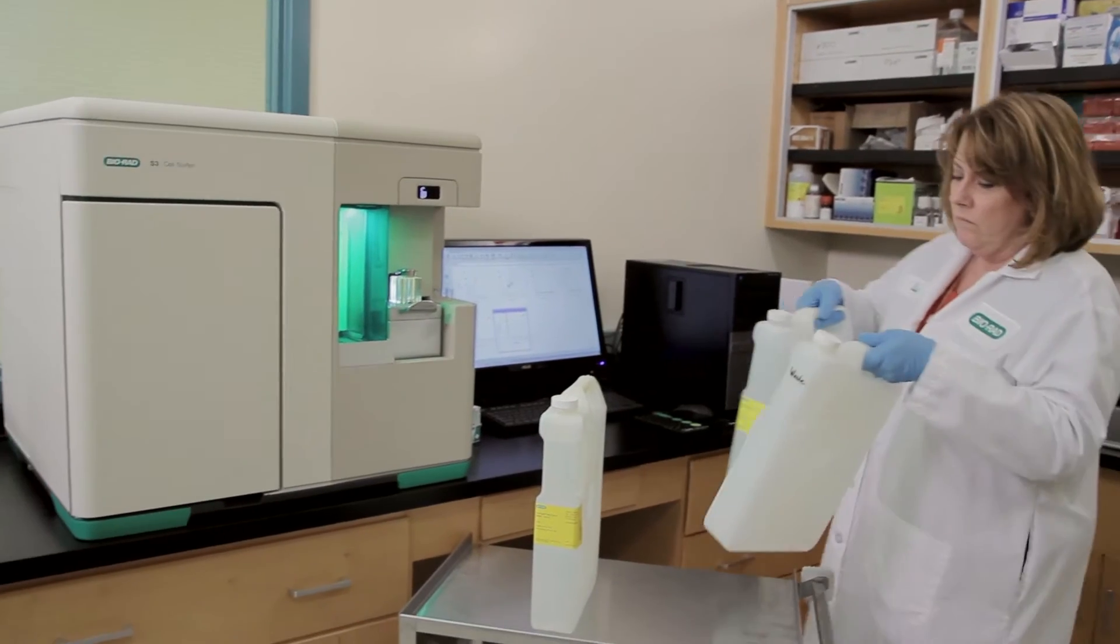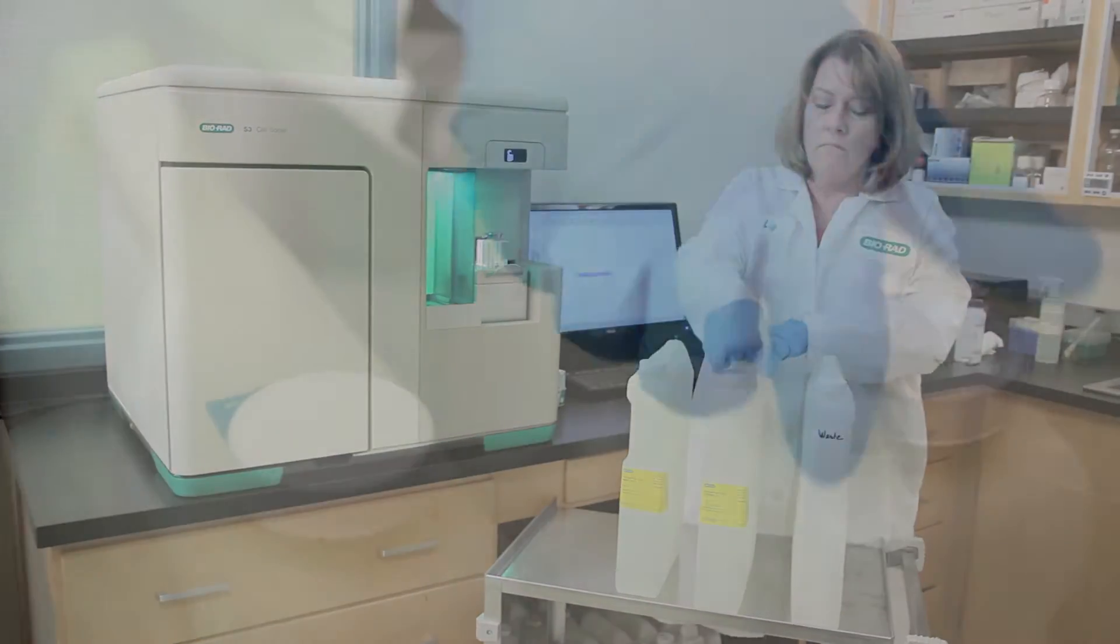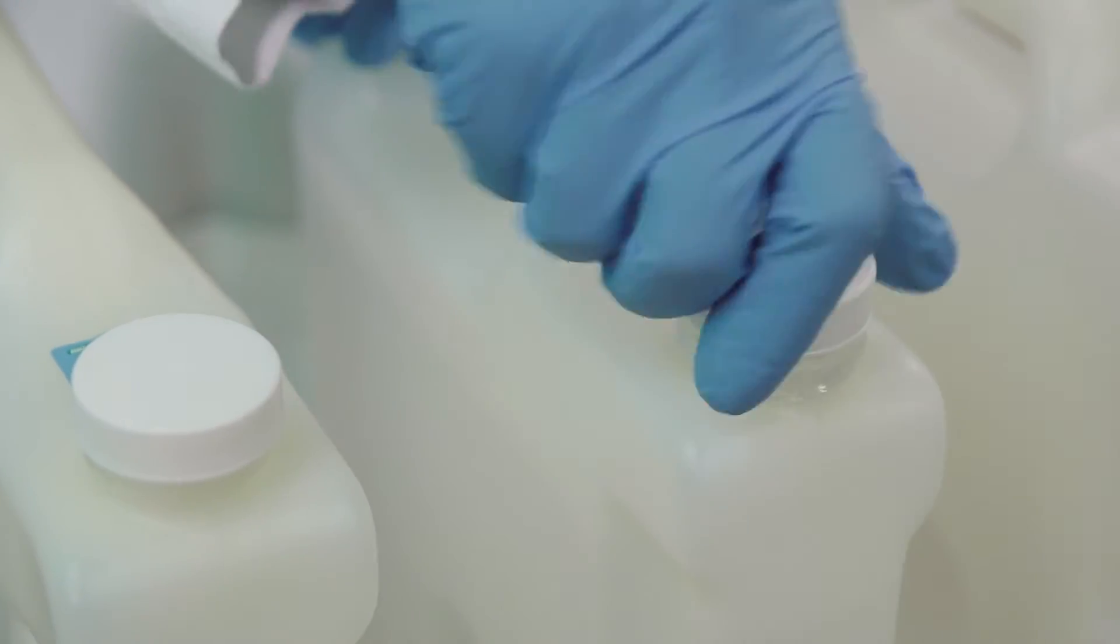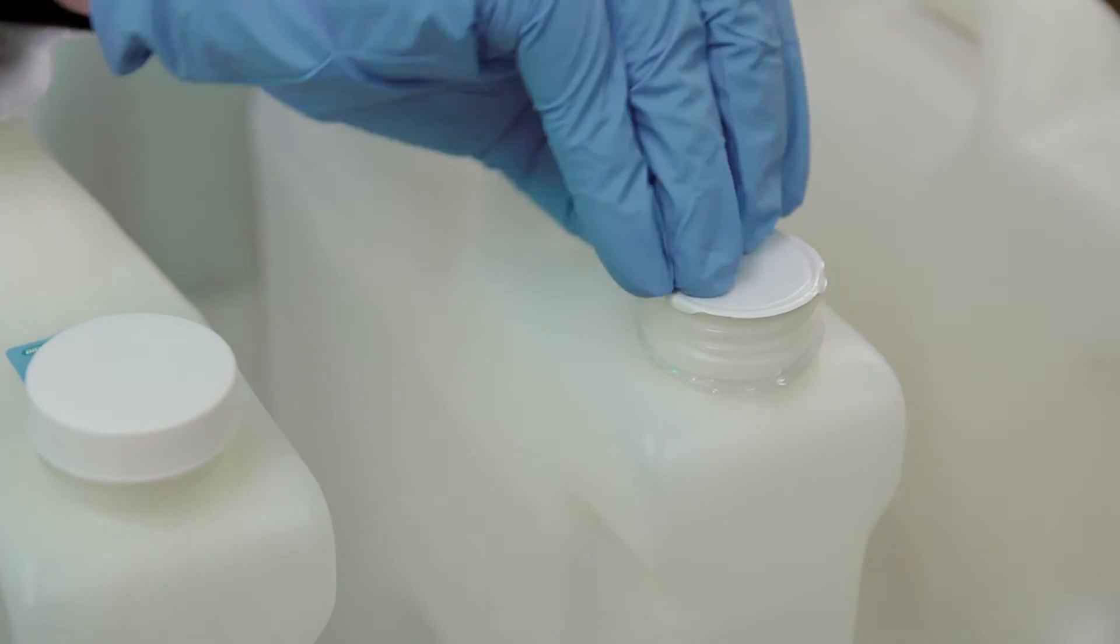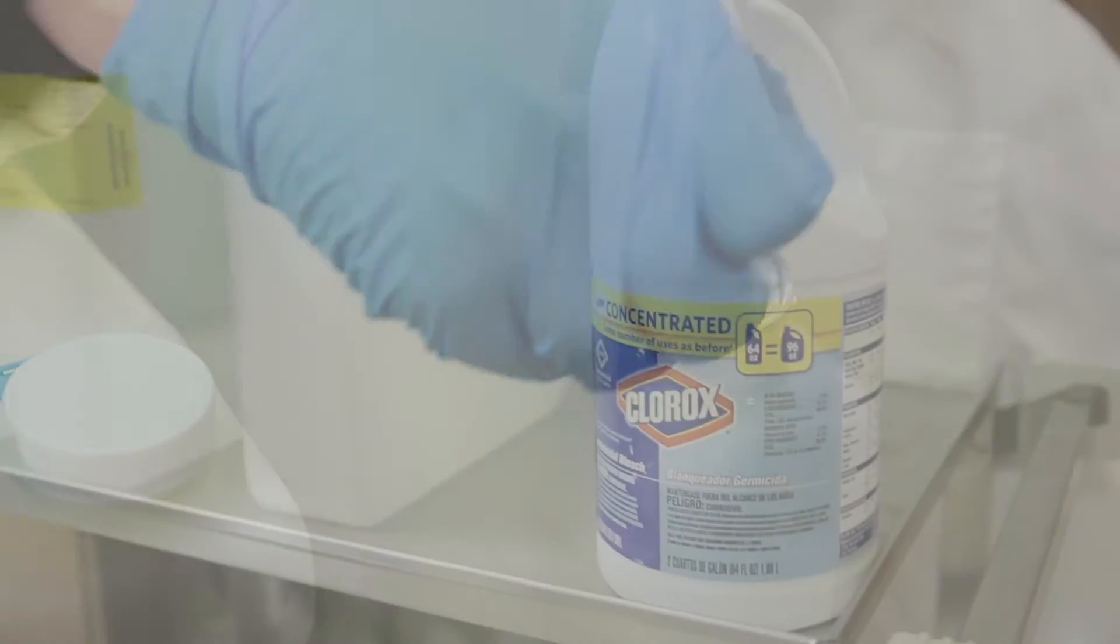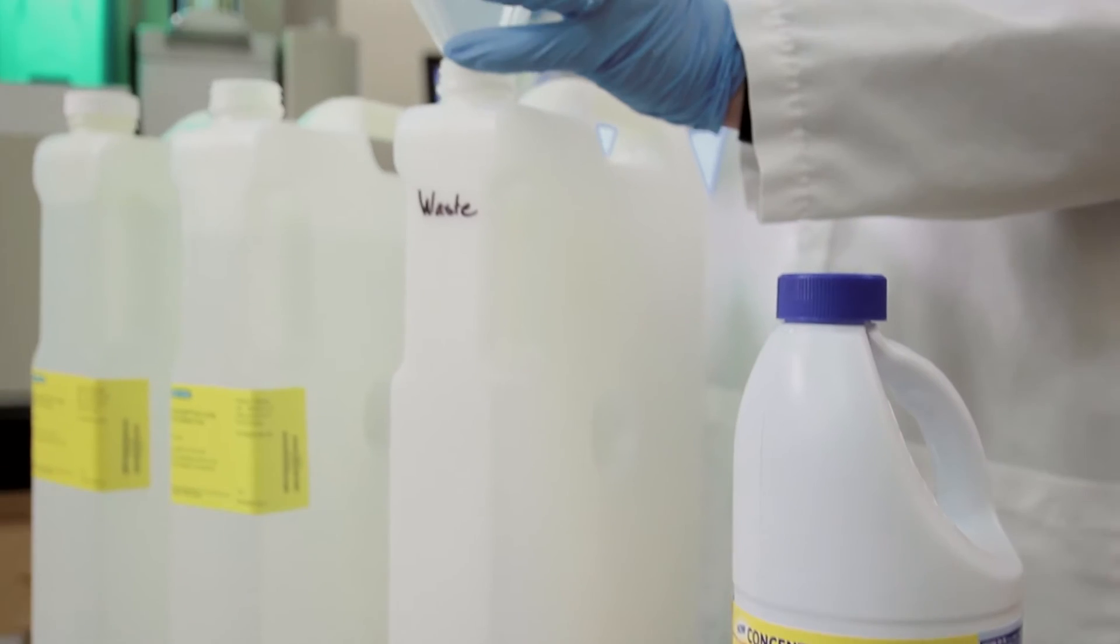To perform a hot swap, make sure you have the replacement bottles ready to go in front of the S3E. Remove the seals from under the caps of the new DI water and sheath fluid containers and prepare a waste bottle with 40 ml of bleach.